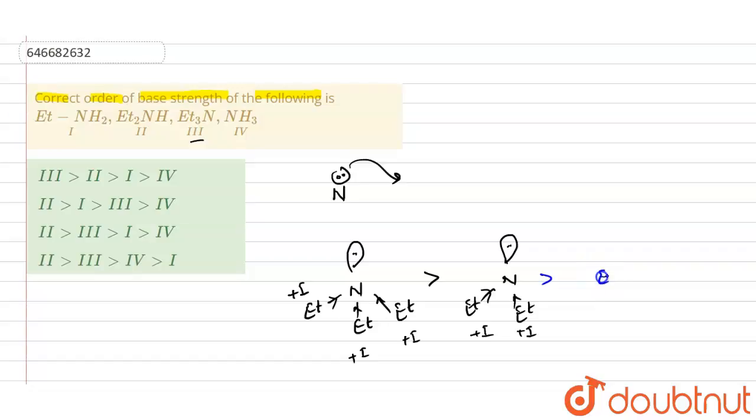Now after that we will have first one, where only one ethyl group is present, so that will donate the electron through plus I effect. Electron density will be higher so it will have more basic strength as compared to NH3, because in NH3 there is no plus I effect present, so it will have the least basic strength.